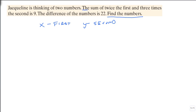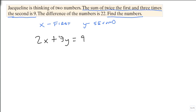Now we just need to translate. Looking at this sentence, it says two times the first, and it's a sum, so plus three times the second is nine. Let's make sure that stays at three.